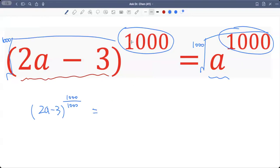But because 1000 is an even number, when we do that, we've got plus minus two values: a positive value and a negative value.